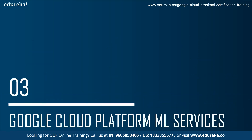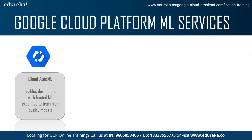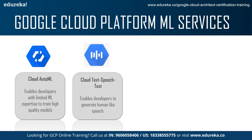Then we talk about the different services that Google Cloud Machine Learning has. The first one is Cloud AutoML, which enables developers with limited ML expertise to train high quality models. Next is Google Cloud Text-to-Speech, a service which enables developers to generate human-like speech. A very good example is Google Translate — when you type in a certain word, Google Translate will say that word in a human-like voice format.